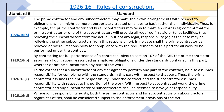1926.16 Rules of Construction: 1926.16a: The prime contractor and any subcontractors may make their own arrangements with respect to obligations which might be more appropriately treated on a job site basis rather than individually. For example, the prime contractor and his subcontractors may wish to make an express agreement that the prime contractor or one of the subcontractors will provide all required first aid or toilet facilities, thus relieving the subcontractors from the actual but not any legal responsibility, or relieving the other subcontractors from this responsibility. In no case shall the prime contractor be relieved of overall responsibility for compliance with the requirements of this part for all work to be performed under the contract.